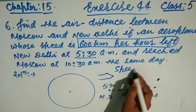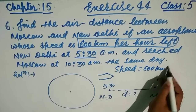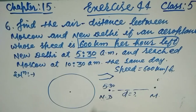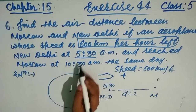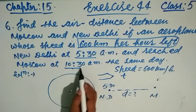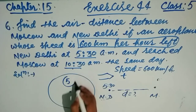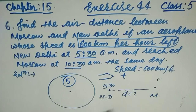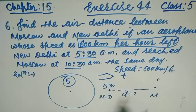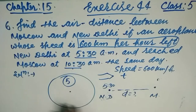The speed is 600 kilometers per hour. Now we calculate the time: the plane starts at 5:30 and reaches at 10:30, so the time taken is five hours. If we add five hours to 5:30 we get 10:30, confirming the travel time is five hours.